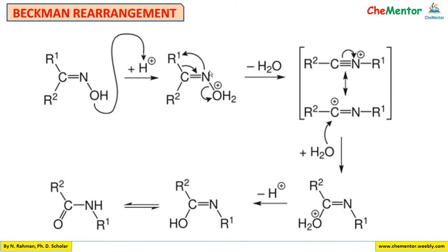So the bond between nitrogen and oxygen gets cleaved, releasing a water molecule. Nitrogen now becomes positively charged. To neutralize the positive charge, the bond between carbon and R gets broken and shifts over. Nitrogen's lone pair picks up the R group — in other words, dehydration occurs followed by an alkyl migration from carbon to nitrogen.